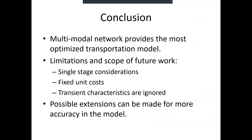Finally, we come to our conclusion. The multimodal network provides the most optimized solution at the minimum cost. However, there are some limitations in the model: it considers only single-stage transportation, the unit cost is considered fixed, uncertainty is ignored, and off-season and peak-season variations are not considered. Possible extensions can be made for more accuracy.